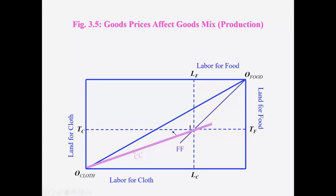The slope of this line CC, rise over run, was TC by LC. Now, when it increases, what happens to this CC line? Well, the slope has increased. TC by LC increases. So it will move towards the land axis.